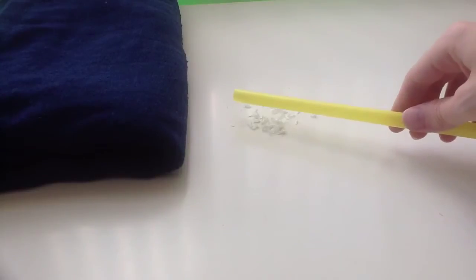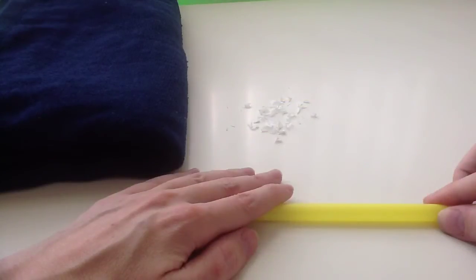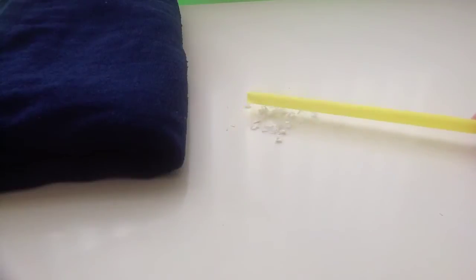Hovering the plastic rod above the pieces of paper is inducing static electricity. Grounding your plastic piece like so causes it to lose its negative charge. The more positively charged paper is no longer attracted to the plastic rod.